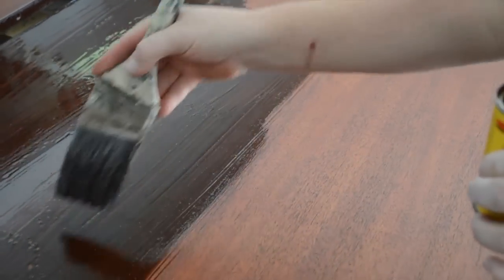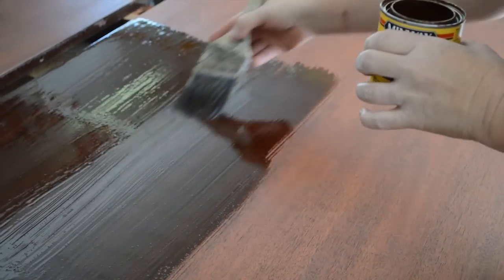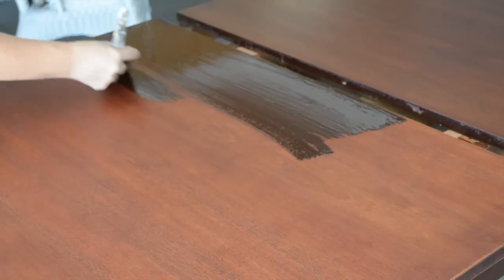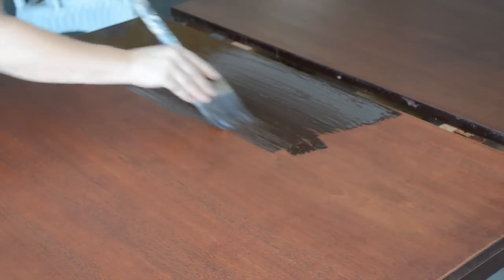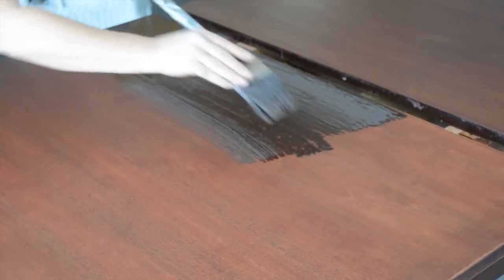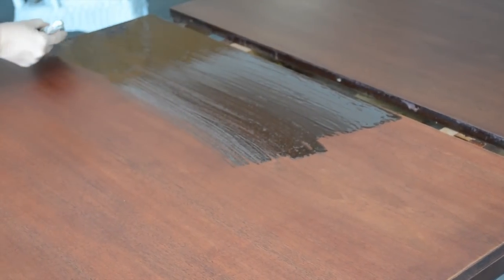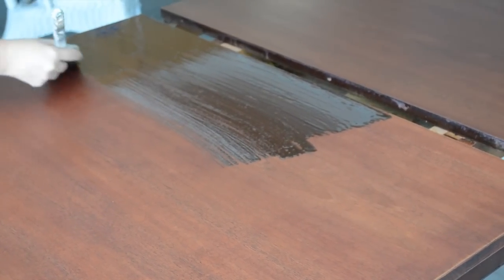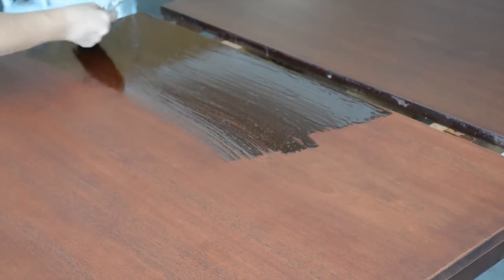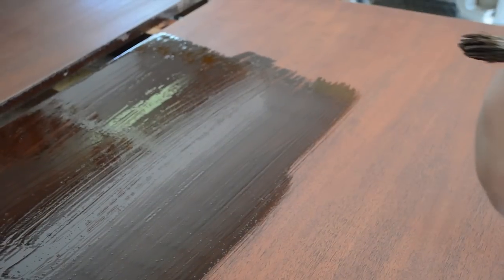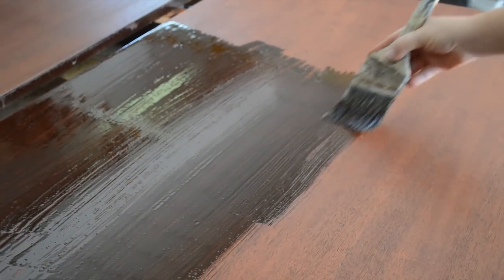English Chestnut is a deep, beautiful brown with only a tiny hint of red. Be sure to stir the stain thoroughly before and occasionally during use. Apply stain in the direction of the grain with a brush. Allow the stain to soak in for about 5 to 15 minutes to achieve desired color.